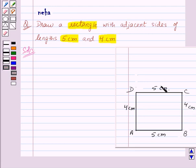So we got the 4 lengths of the rectangle. Now we also know that all the angles of a rectangle are right angles. That means it is 90 degrees.